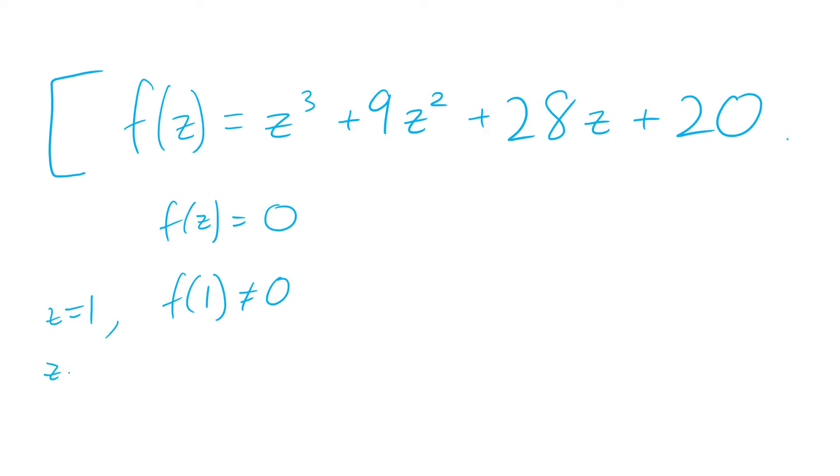But if we substitute Z equals minus 1, then that polynomial does equal 0. Therefore, we know that minus 1 is a solution to the polynomial, so we know that Z plus 1 is a factor for that polynomial.